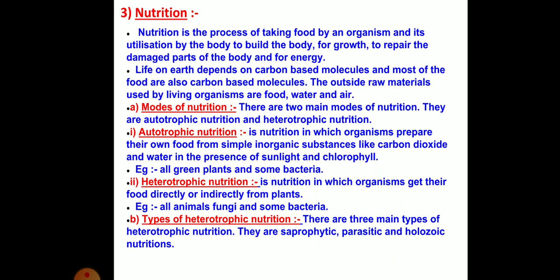Heterotrophic nutrition is the nutrition in which organisms get their food directly or indirectly from plants. Almost all living organisms are heterotrophic except plants — examples include all animals, fungi and some bacteria. There are three main types of heterotrophic nutrition: saprotrophic, parasitic and holozoic nutrition.